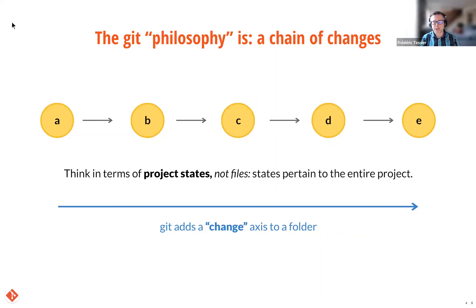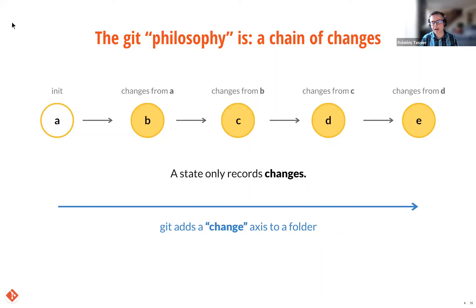You may be thinking it's wasteful in terms of disk usage to record an entire snapshot of the entire project for a very small change. And you're right — it would be. That is why a state only records changes with respect to a previous state. A new state can be a single byte deleted in a file or adding gigabytes of data. As the user, you decide when to save a new state. State B contains changes with respect to A, C additional changes on top of B, and so on.